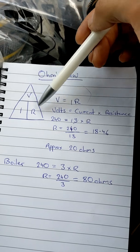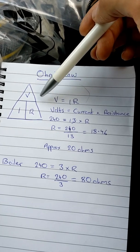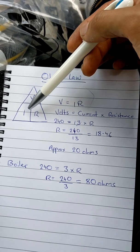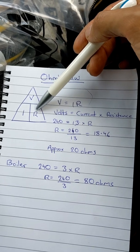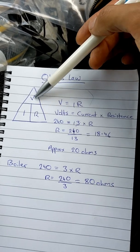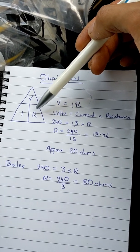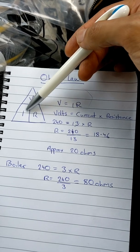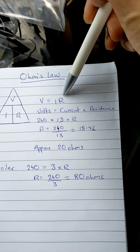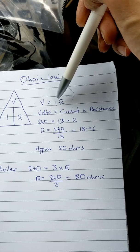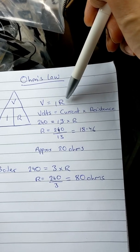Depending on which value you're looking to work out, you can rejig things around. If you need to work out voltage, it's current times resistance. If you need to work out your current, it's voltage divided by resistance, and if you want resistance, it's voltage divided by current. So V equals IR is your general formula, and then you just move things around depending on what you're trying to work out.